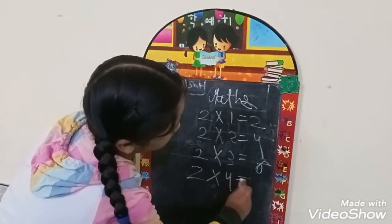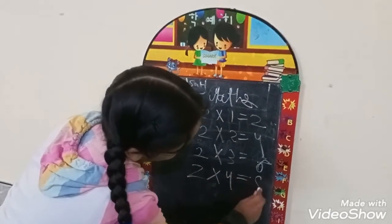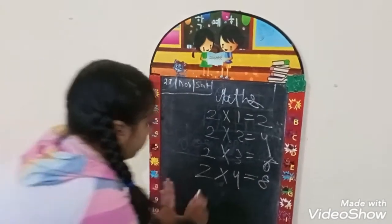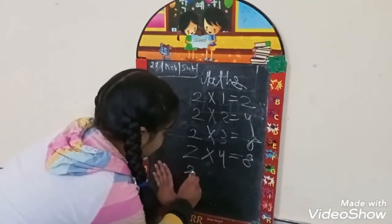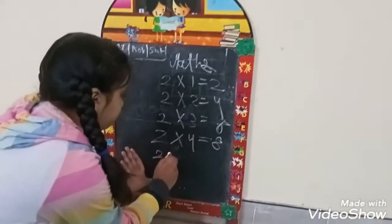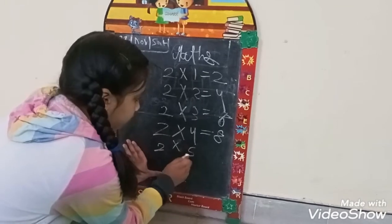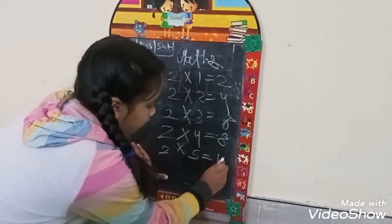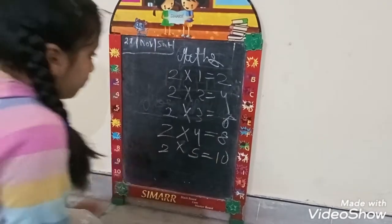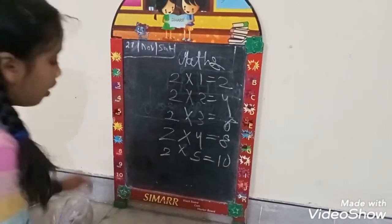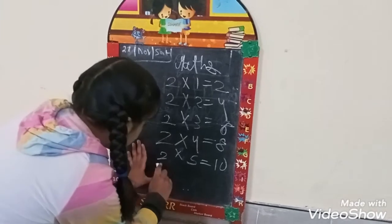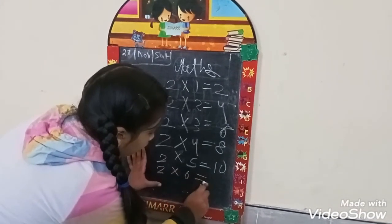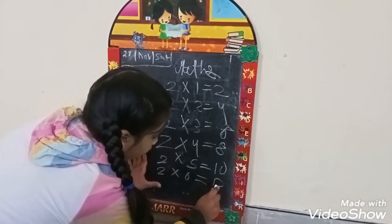Two four's are eight. Two four's are eight. Two five's are ten. Two five's are ten. Two six's are twelve.